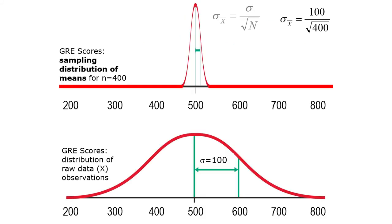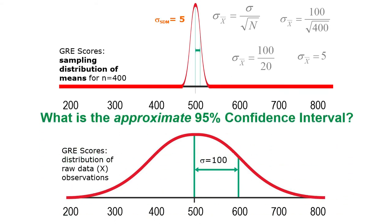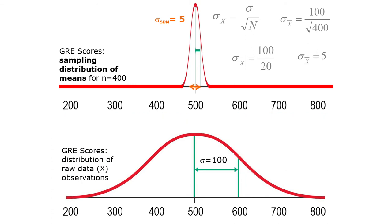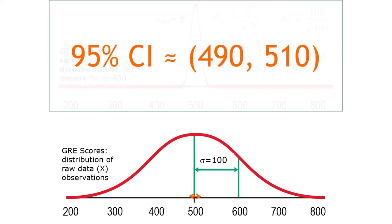With the huge sample size of n equals 400, the standard error is only 5. The approximate 95% confidence interval is tiny — just two standard errors up and two standard errors down, but now a standard error is only 5 points. Our approximate 95% confidence interval is 490 to 510. So if we had taken a sample of 400 GRE scores with a mean of 500, we would report our best estimate of the true population mean is 500, with a 95% confidence interval of approximately 490 to 510.